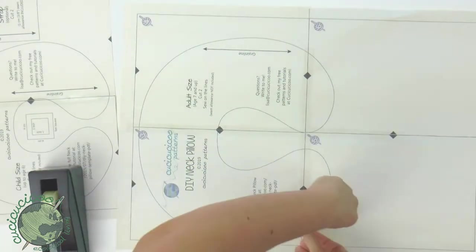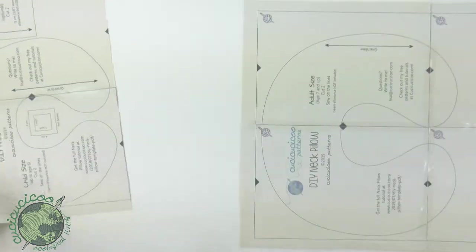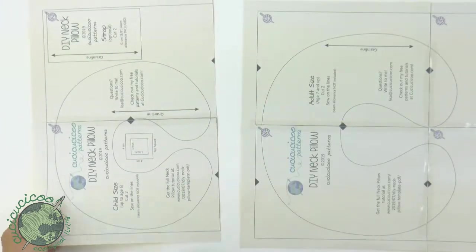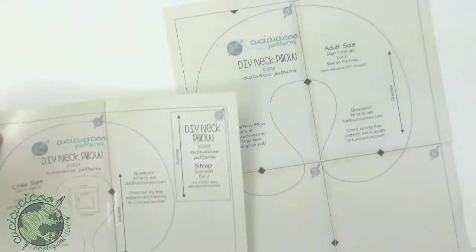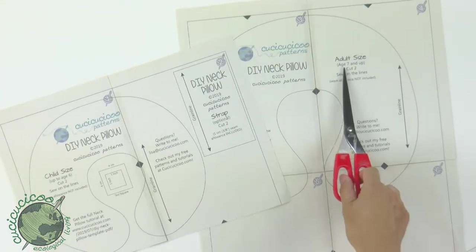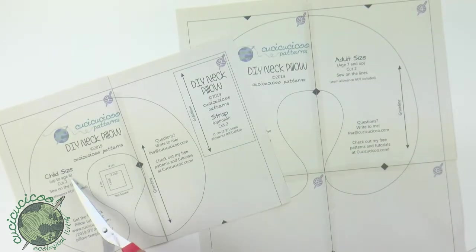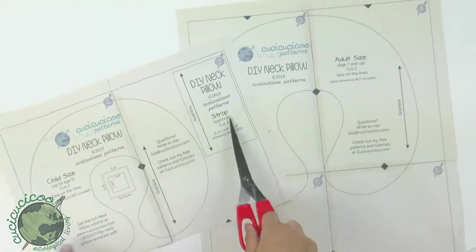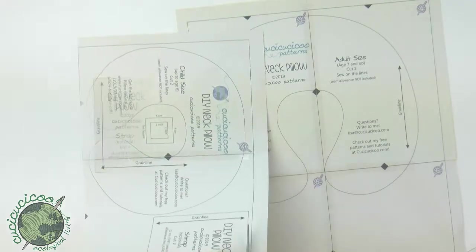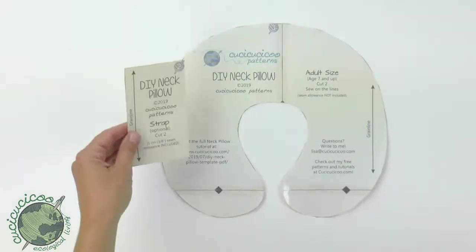Okay, there we go. All right, in theory you would need to join those but it's not necessary for this particular pattern. We're going to do the adult size. This is the child size but we're going to do adult size and the strap. So let's cut out those pieces. Here we go, here are the pieces. Let's start with the strap.